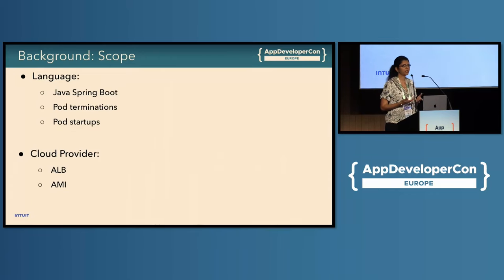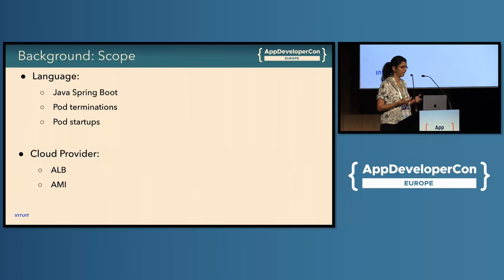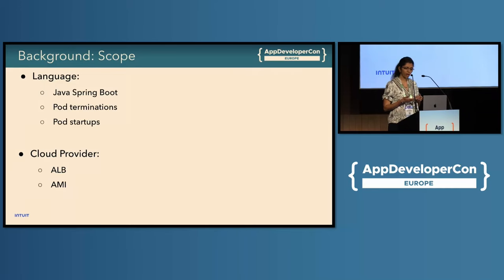As far as cloud providers, we are an AWS shop, so you will see us throwing around words like application load balancers, ALBs, AMIs, and AZ rebalancing. Again, this is not just an AWS-specific problem or best practice — you could apply it to your cloud provider of choice or any other infrastructure you might be using.